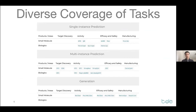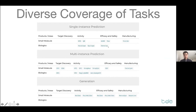TDC has diverse coverage of therapeutic tasks. For target discovery, we have gene disease association prediction and microRNA target interaction prediction. For activity screening, we have high-throughput screening, paratope and epitope prediction, drug-target interaction prediction, and peptide-MHC binding, and so on. For efficacy and safety, we have ADMET and developability prediction for antibodies, and drug-drug interaction, and also numerous molecule generation datasets and oracles. For manufacturing, we have reaction yield prediction, catalyst prediction, and reaction outcome prediction.